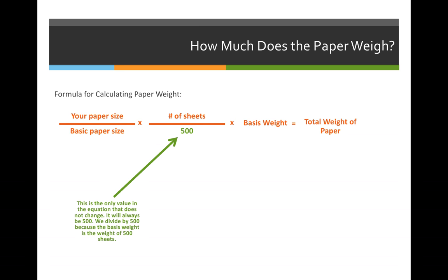We divide by 500 because the basis weight of stock, which we're going to multiply by in our third column, is defined as the weight of 500 sheets of paper in its basic size.